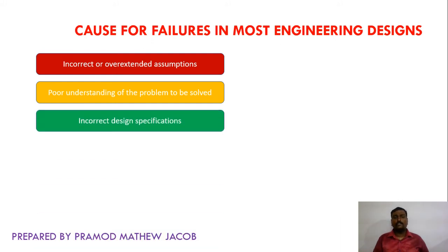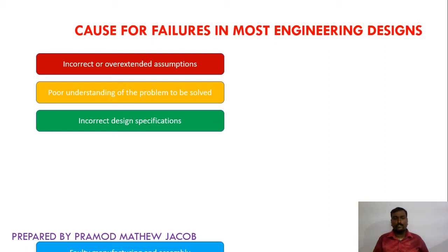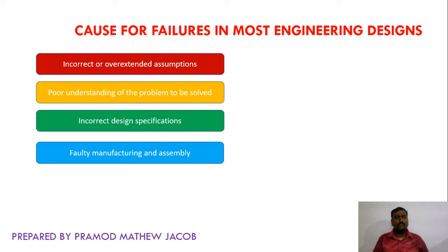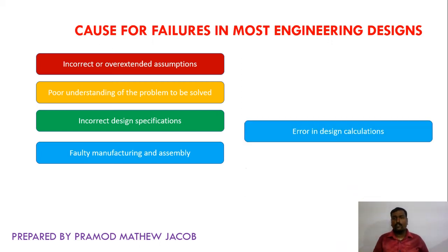The next cause is incorrect design specifications. The specifications provided may not always be correct and precise, and there may be some design ambiguities, which may lead to the failure of the designed system. The next one is faulty manufacturing and assembly — a very common cause of engineering design failures. If a faulty component or module is used while assembling a product, it may lead to the failure of the entire product or system.